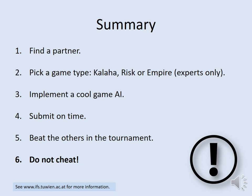In summary: you have to find a partner and form a group — always two students, never one alone, never three. Then pick a game type: Kalaha, the simplest one; Risk, if you're interested in partial information and elements of chance; or Empire, a real-time game, but only for experienced Java programmers since it's a new environment that may have bugs. Then implement a cool game AI agent for your game. Submit it on time. If possible, beat the others in the tournament. And very importantly, do not cheat. Implement your own creative ideas, put them into code, and it's a fine project.